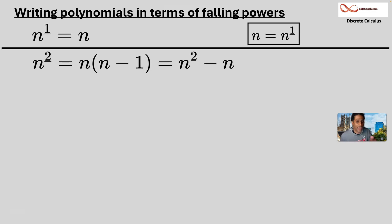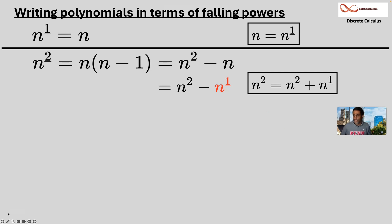Replace the n with n falling one. And add it over to the other side. N squared is n falling two plus n falling one. All right. Great. And one more.